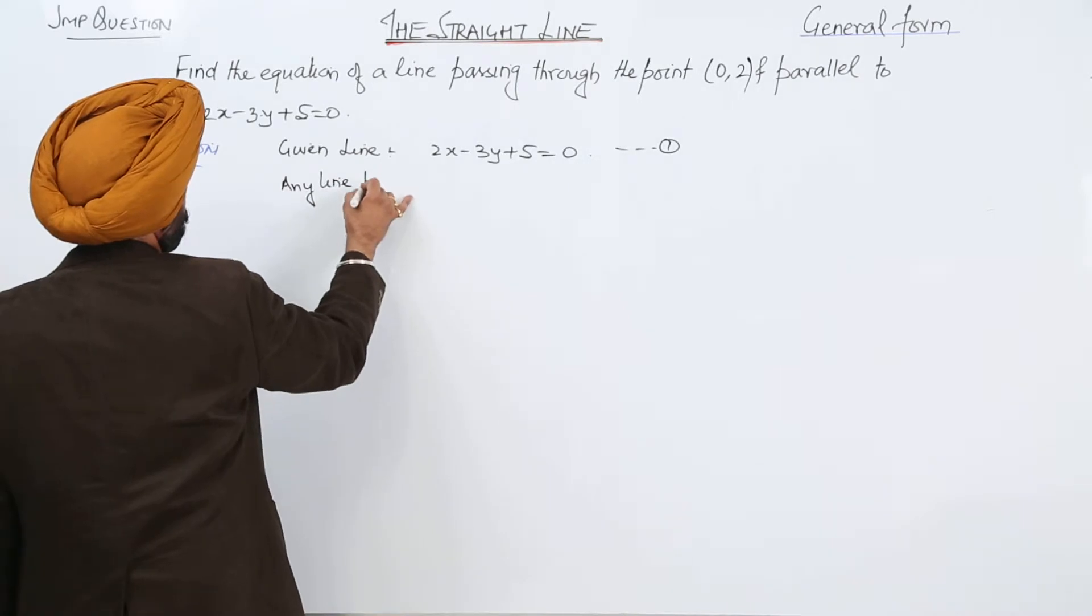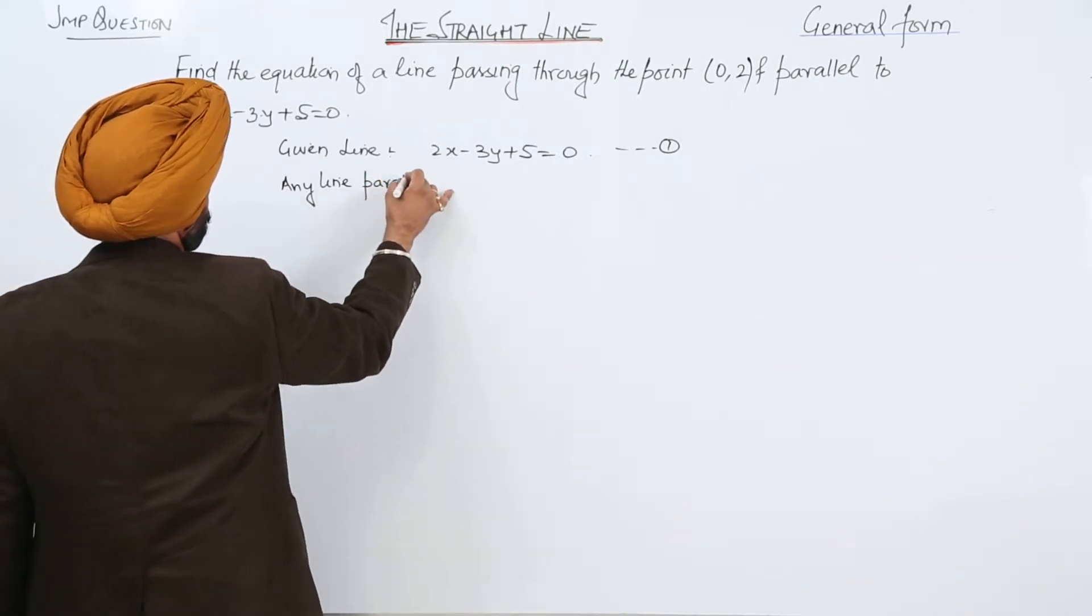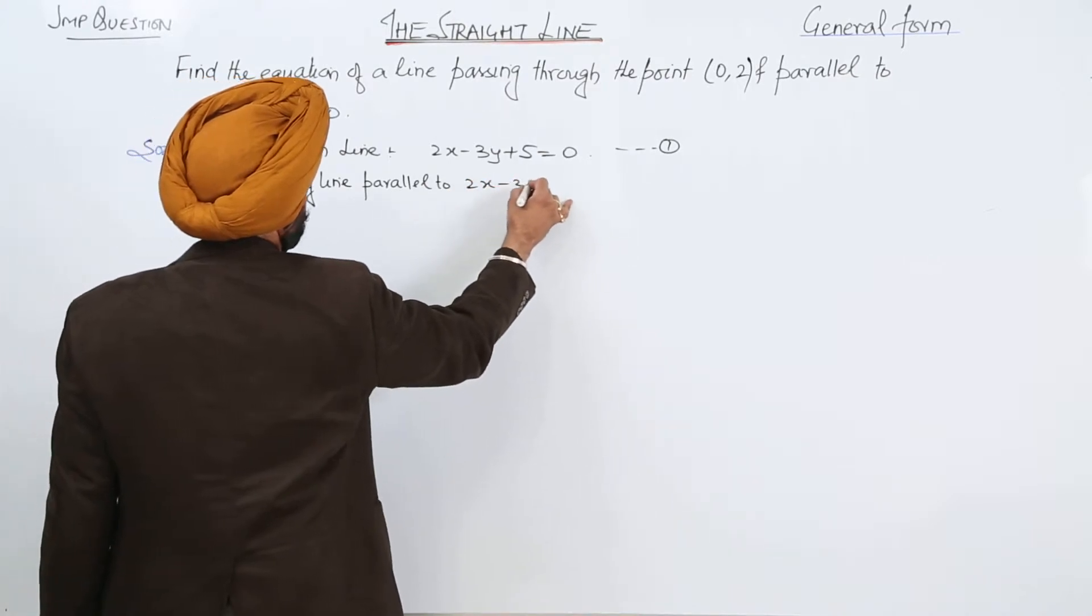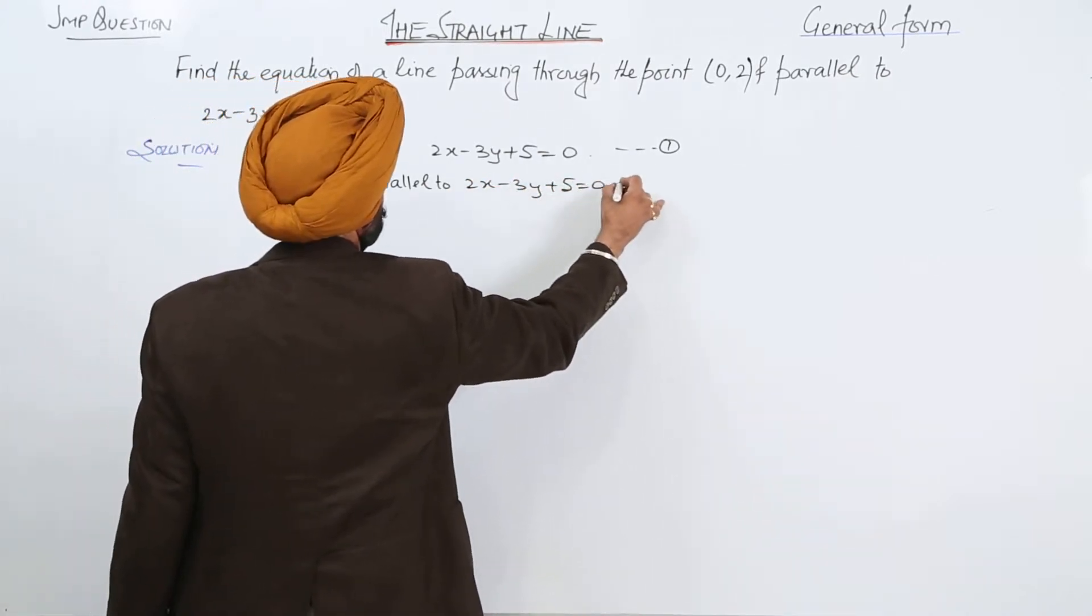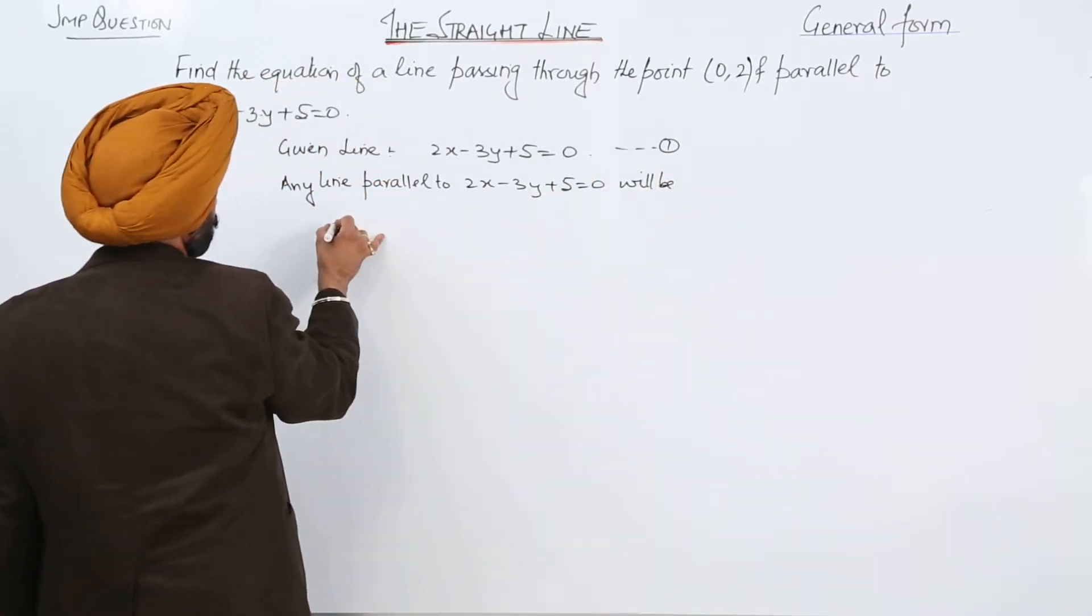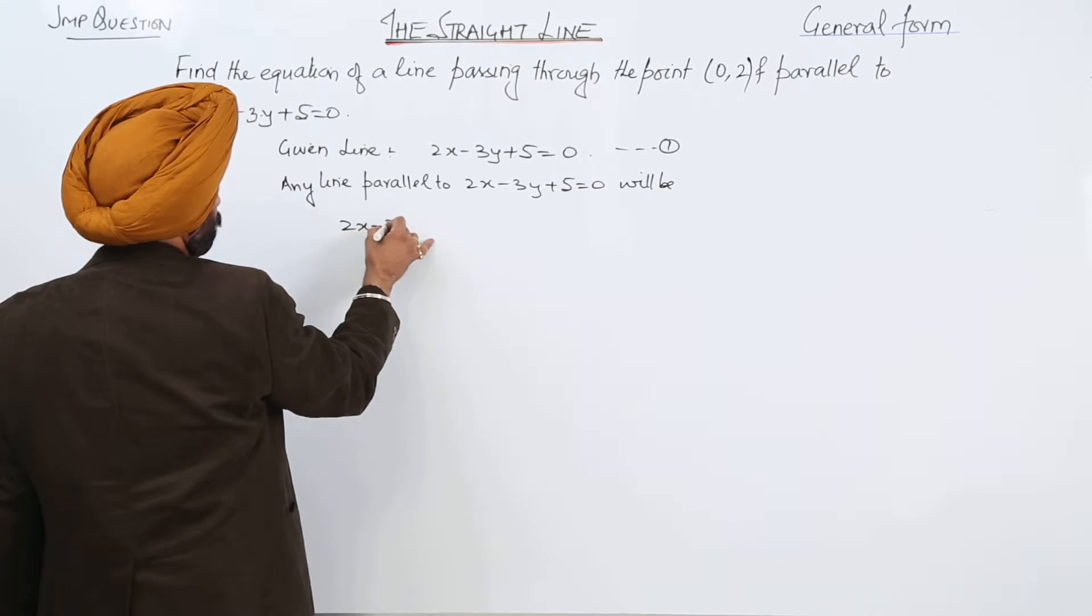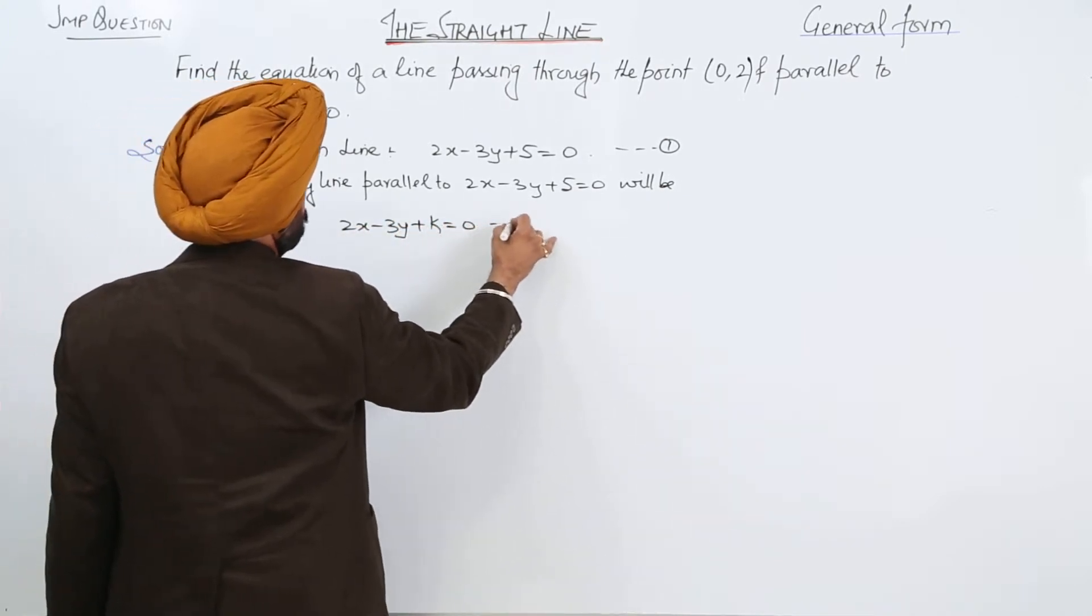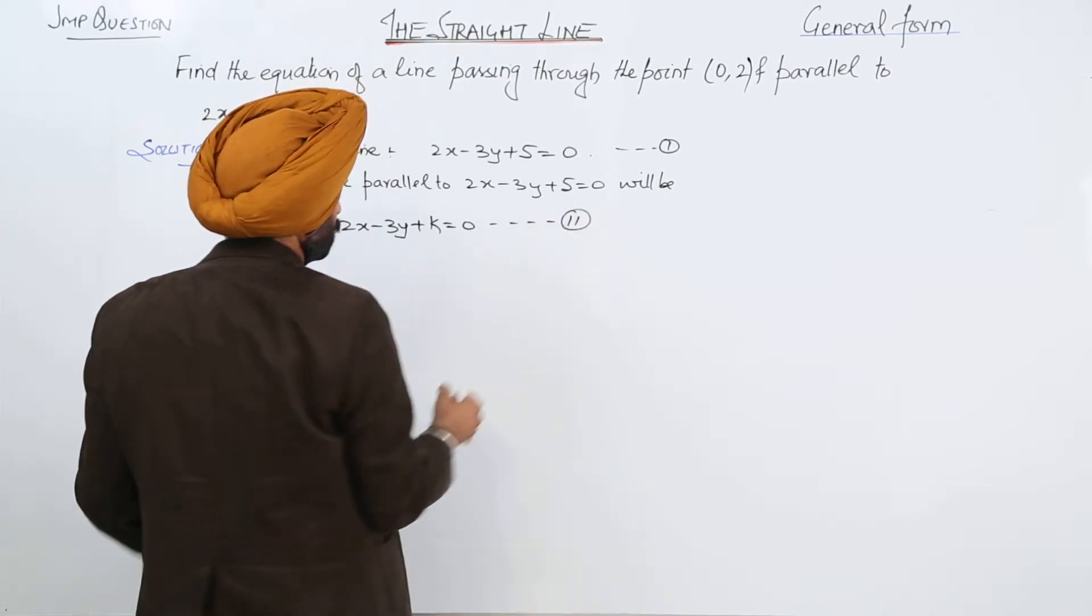Any line parallel to 2x - 3y + 5 = 0 will be 2x - 3y + k = 0. Let this be equation 2.